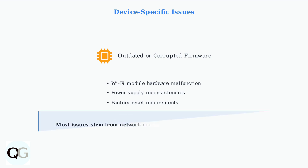Recent firmware updates in 2024 and 2025 have improved connectivity stability, but these fundamental factors still account for the majority of connection problems. Understanding these causes is the first step toward resolving your camera's connectivity issues.